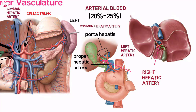The right hepatic artery passes posterior to the uncinate process of the pancreas and runs along the posterior wall of the common bile duct into the right hepatic lobe. The left hepatic artery approaches the liver in the lesser omentum and branches to supply the caudate, quadrate, and medial and lateral segments of the left lobe.